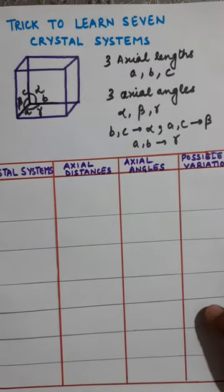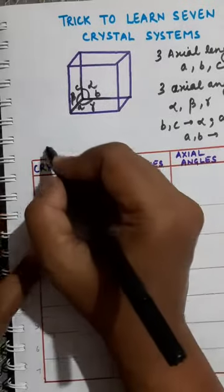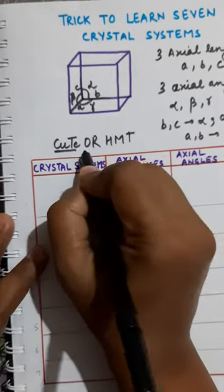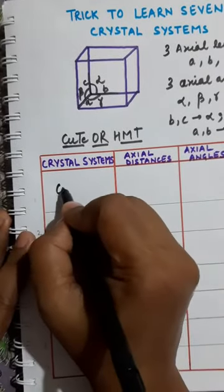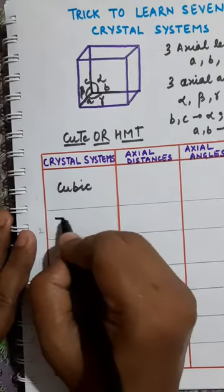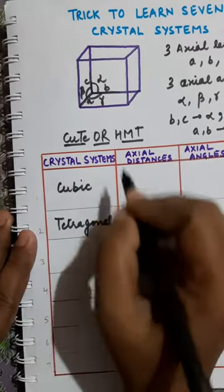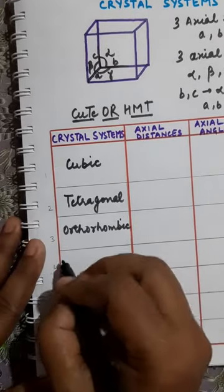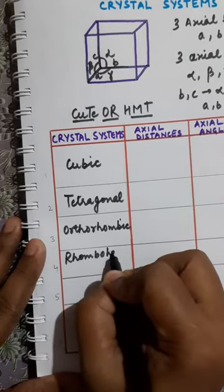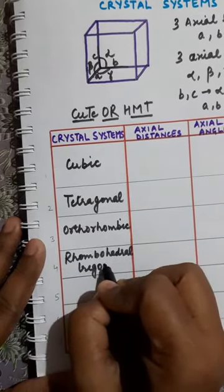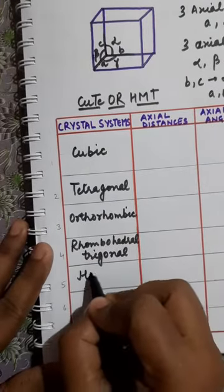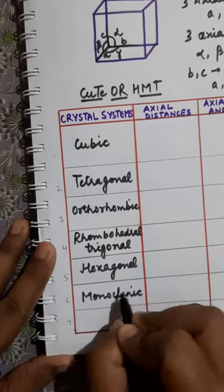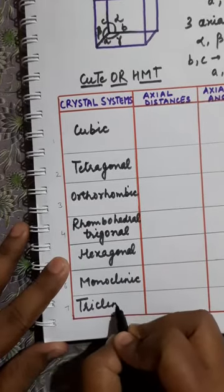Now coming to the trick — how to learn the 7 crystal systems. You have to remember this word: CU TE O R HMT. These are the names of the crystal systems. CU stands for cubic, TE stands for tetragonal, O stands for orthorhombic, R stands for rhombohedral (also known as trigonal), H stands for hexagonal, M stands for monoclinic, and T stands for triclinic. In this way you have to remember these 7 crystal systems.